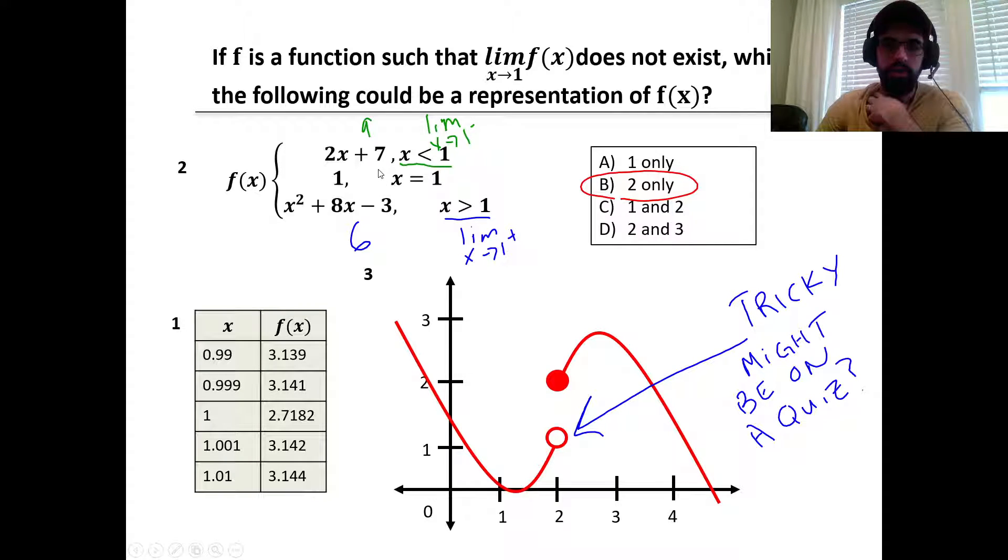Number 2, if we look at the left bound, limit as x approaches 1 from the left, that would be when x is less than 1, we could direct substitute 1 in for 2x plus 7. That would be 2 plus 7, which is 9.